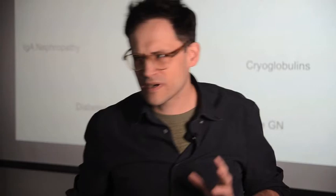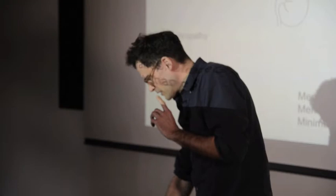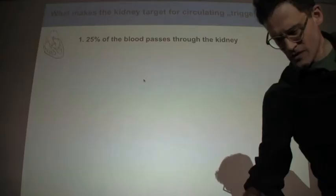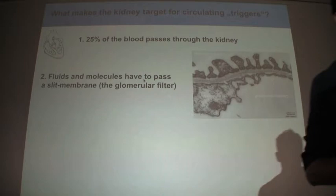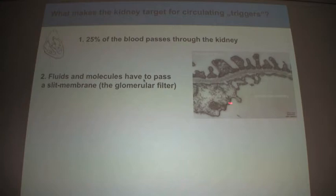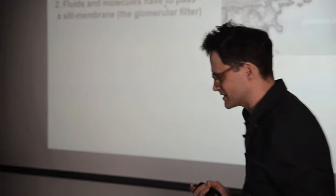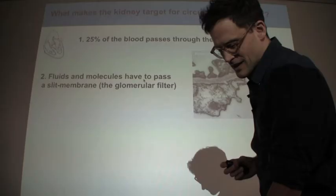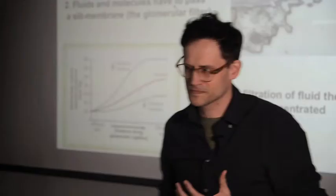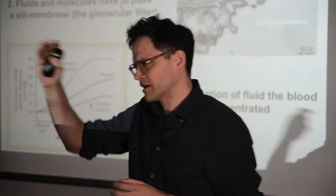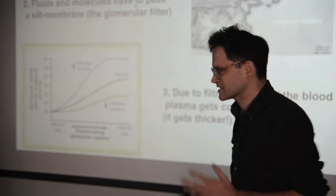How does that happen? First, 25% of the blood that exits your heart flows through the kidney, so the kidney sees a lot of blood. Anytime you have a circulating immune complex or antibody, the kidney will see a lot of it. Second, we have this filter station. I don't know what your everyday experience with filters is, but I believe it's in the nature of filters that things get stuck there — and you can vividly imagine how things get stuck in this membrane. And lastly, in this filter station the body presses out fluid, which implies that along this glomerular tuft the blood loses fluid and gets thicker. The proteins in the blood get concentrated, the viscosity rises, and this of course implies a higher risk of things getting stuck there.